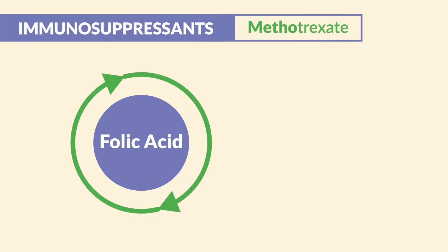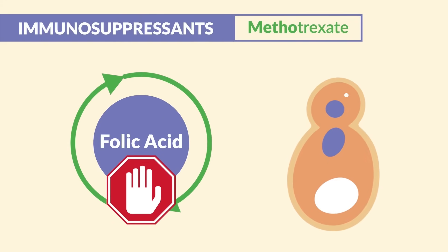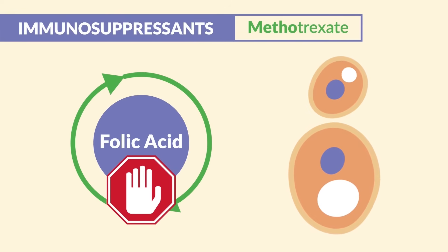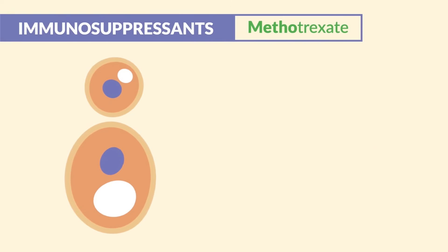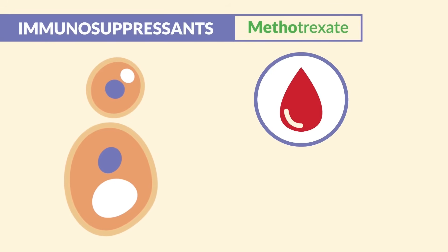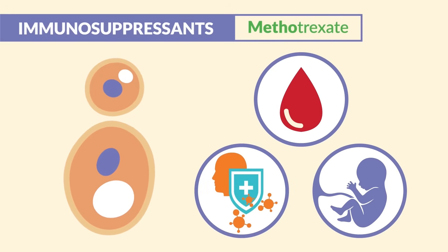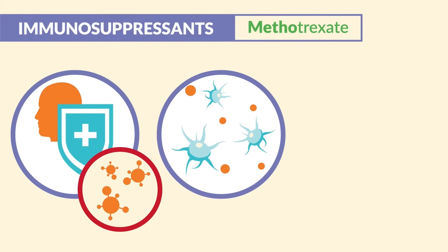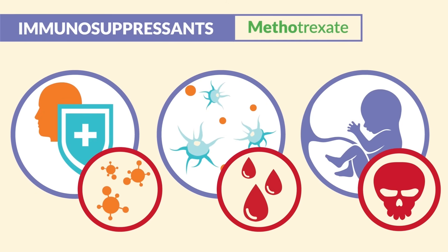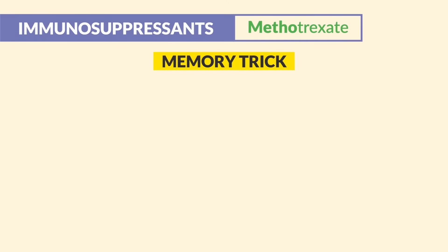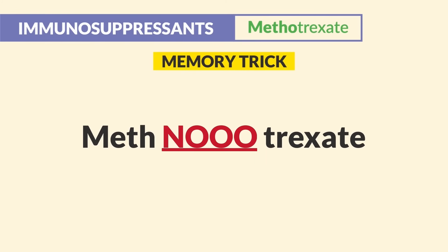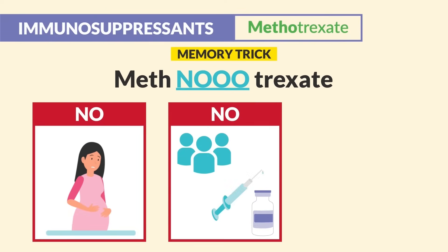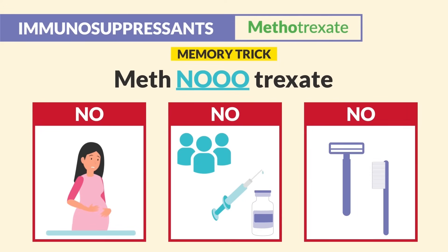Methotrexate's mechanism of action: it stops folic acid metabolism, which stops cellular reproduction in the fastest-replicating cells. The fastest-replicating cells are in the blood and immune system, and in pregnant clients, the growing fetus. This leads to a very weak immune system causing infections, low platelet count leading to serious bleeding, and even fetal death. Memory trick: methotrexate — no pregnant clients, no crowds or live vaccines, no razors or hard tooth brushing due to bleed risk.